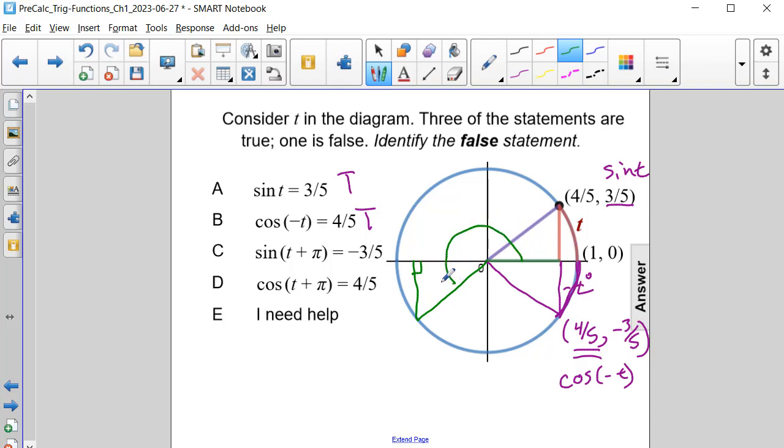This is the angle t plus pi. The ordered pair that corresponds to this point is negative four-fifths, negative three-fifths. So the sine of t plus pi is indeed negative three-fifths.